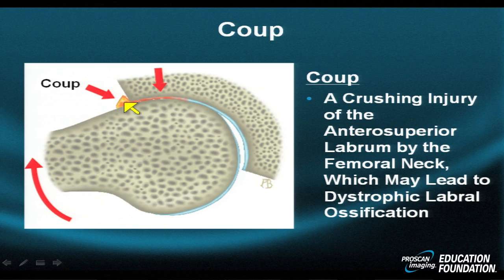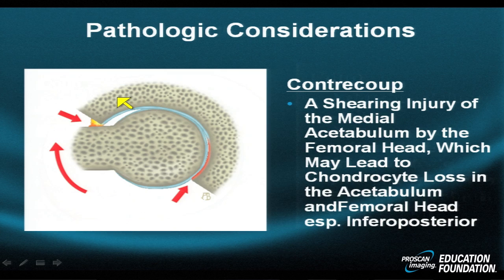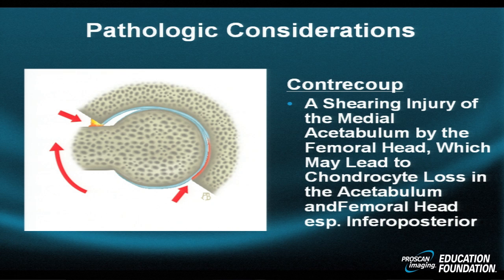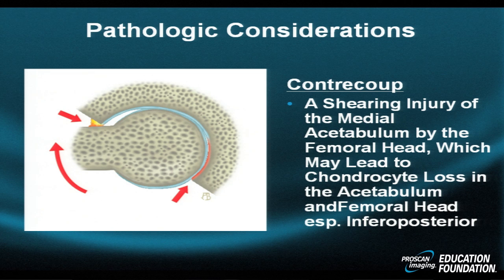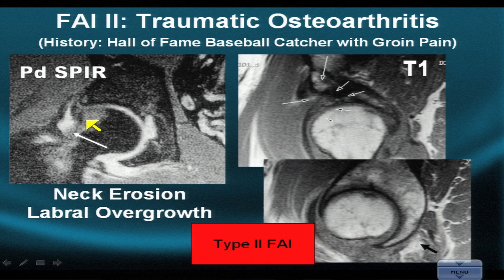These are known as crushing-type direct coup injuries. These coup injuries may lead to dystrophic ossification or an ossicle. A contrecoup injury may also ensue because the anterior wall is longer and more lateral than the posterior wall, pushing the femoral head backwards — displacing and rotating it. This rotation of the femoral head backwards produces pressure against the posterior acetabular cartilage, leading to a shearing contrecoup injury in rotation of the hip, away from the site of initial impact.